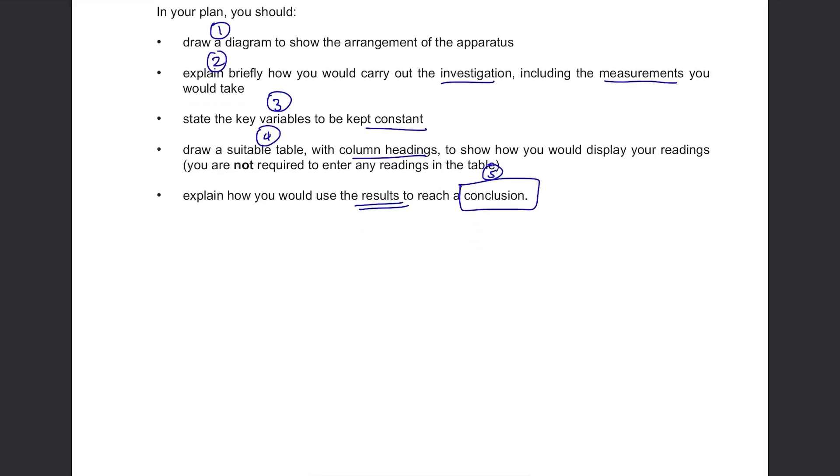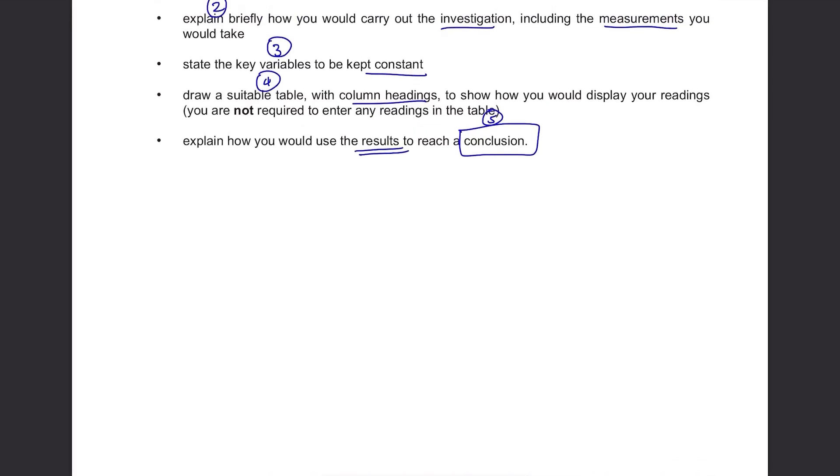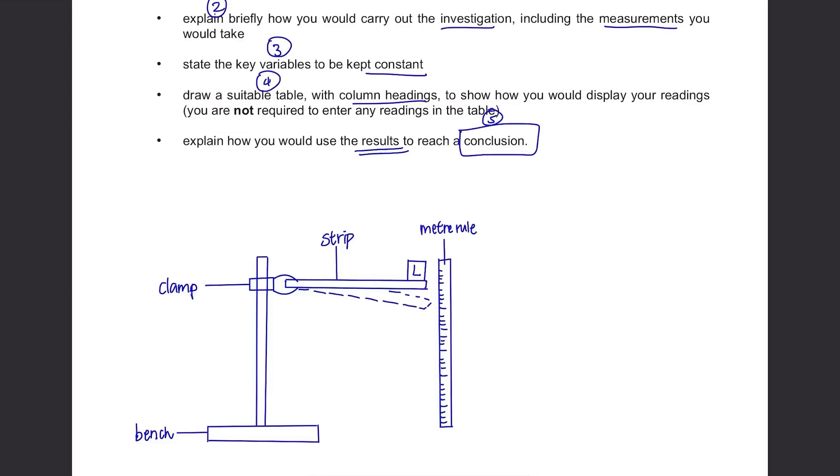First, let's draw a diagram to show how the experiment will be carried out. Since we are placing something on the strip, we need to clamp one side of it to bench. When a load is placed, it will bend like this. Then we need to show how we are going to measure how much it had bent. So put a ruler here vertically to the strip so we can measure how much the strip has went down by the weight put on it.